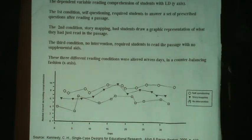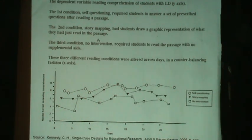The second condition, represented by the upside-down triangle, was story mapping. Story mapping had students draw a graphic representation of what they had just read in the passage, and then answer questions. That graph looks somewhat similar, but there is some response differentiation, because the self-questioning scores are higher in almost all cases except one particular instance.